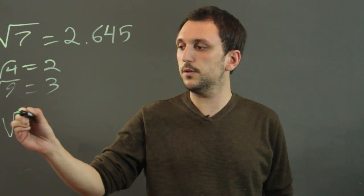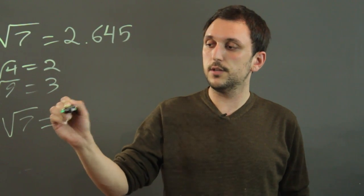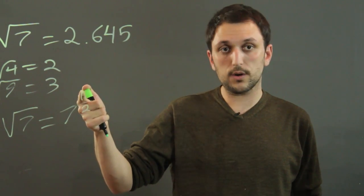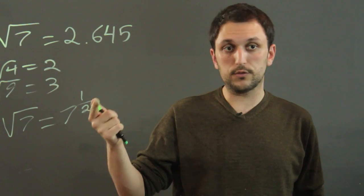Another way to express the square root of 7 is 7 to the 1 half, because in exponents the numerator is the power, the denominator is the root.